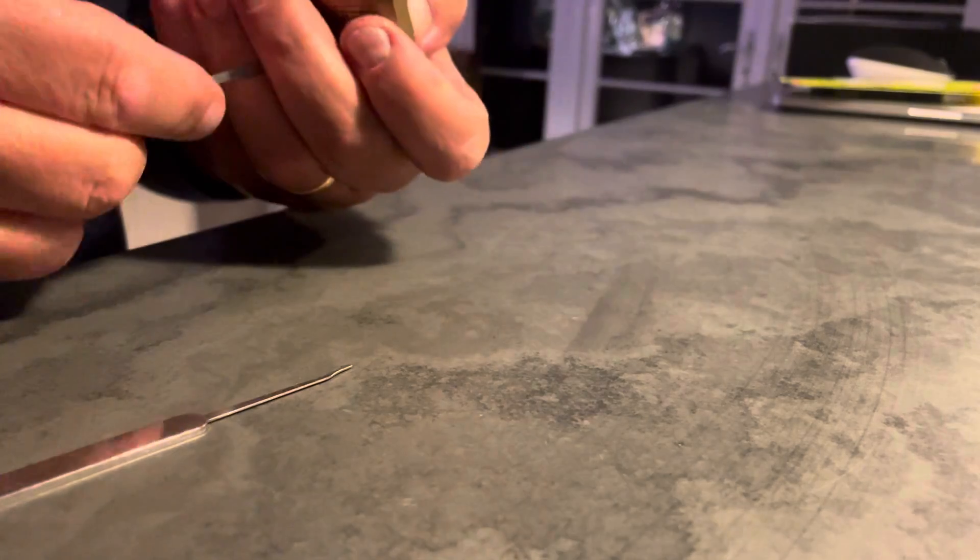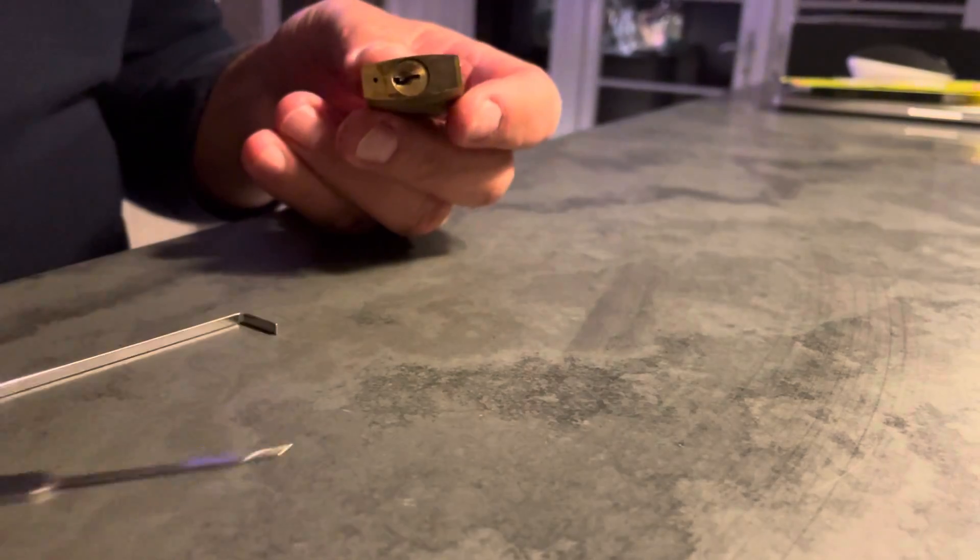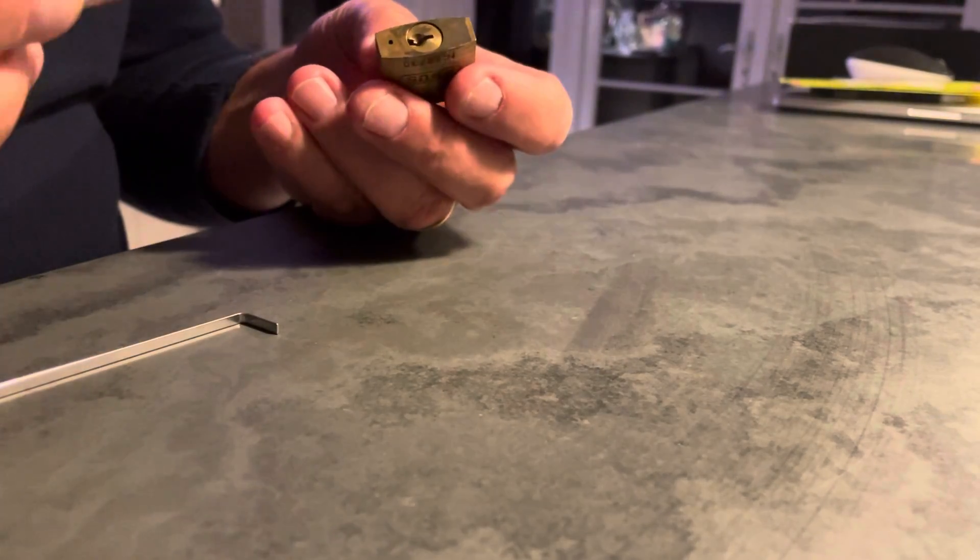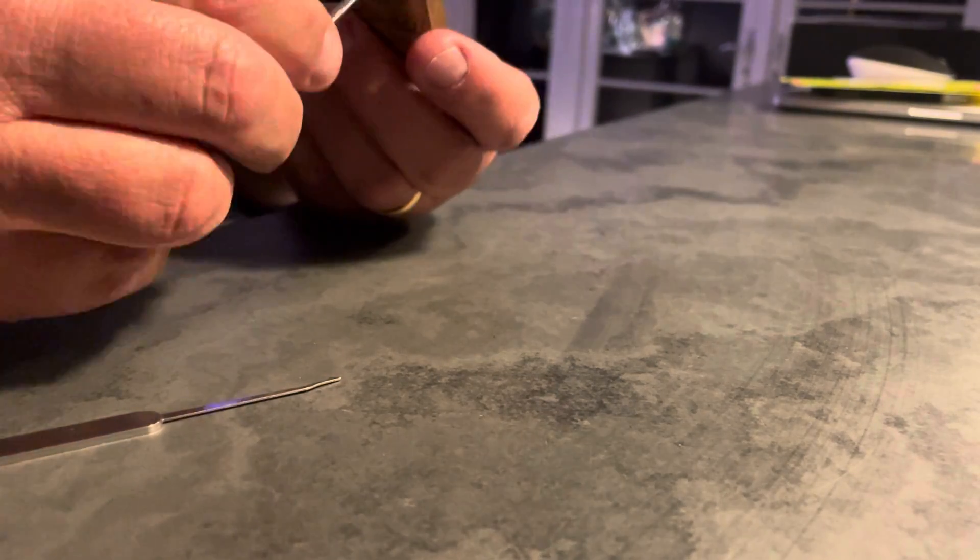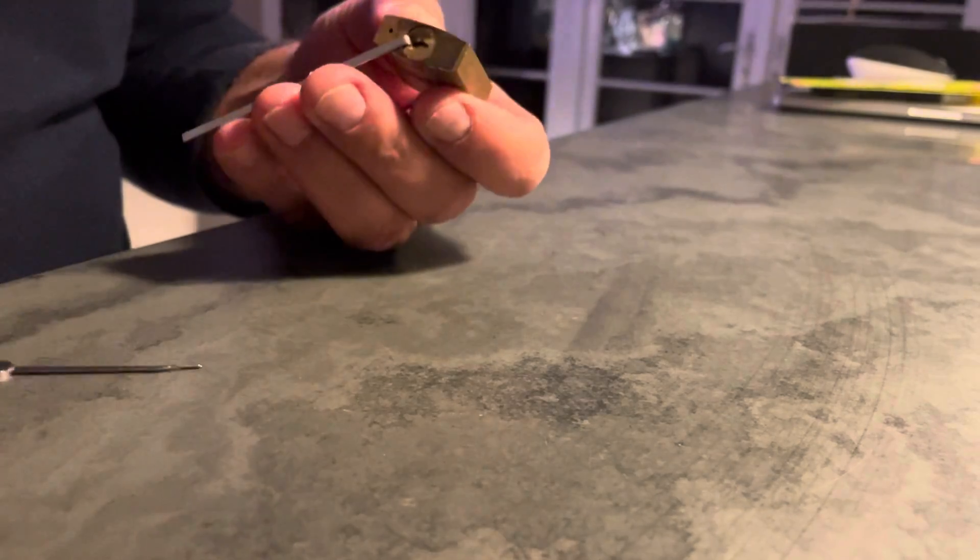Now I'm going to attempt to pick it using some lock picking tools. This is an individual pick for doing the individual pins, and this is the keyway tensioner, so put a bit of tension on the keyway.